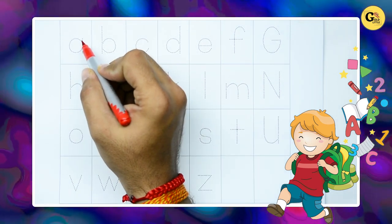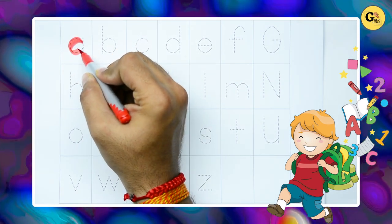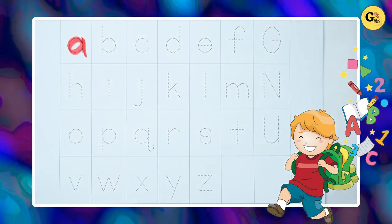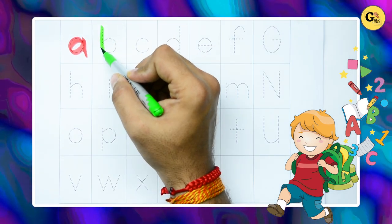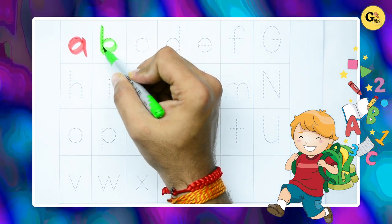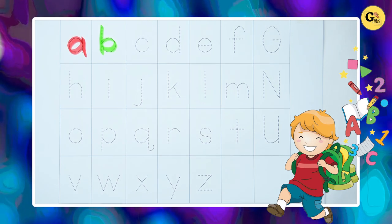A, small a with red color. It's A. B, B with green color. It's B, small b.